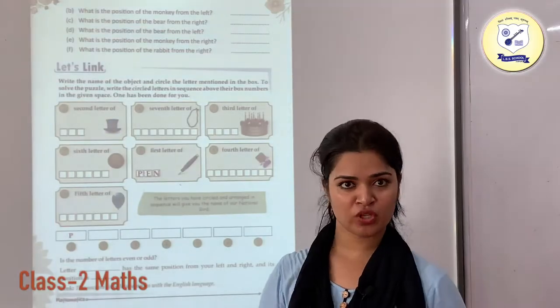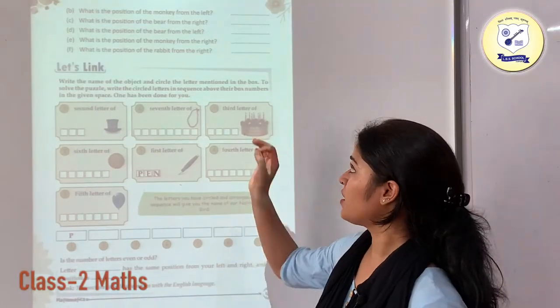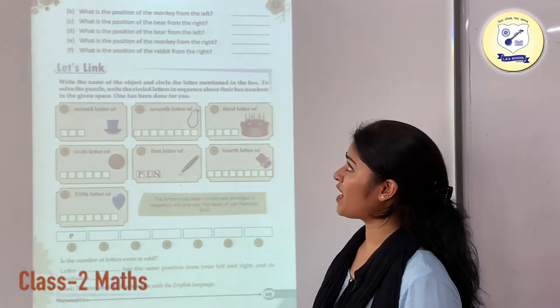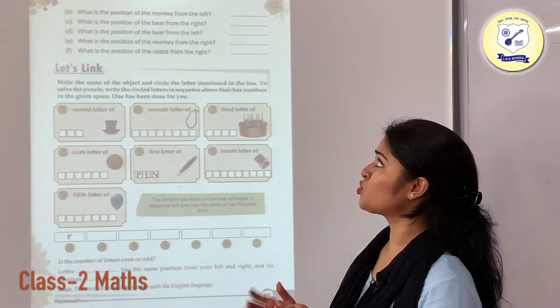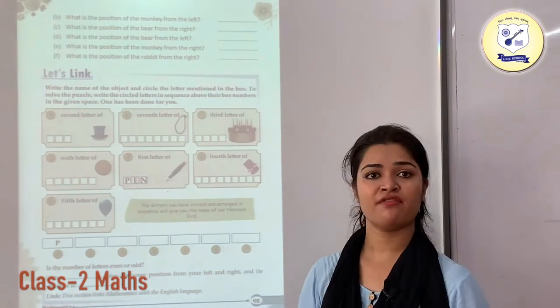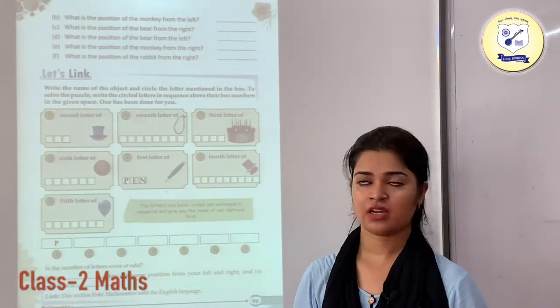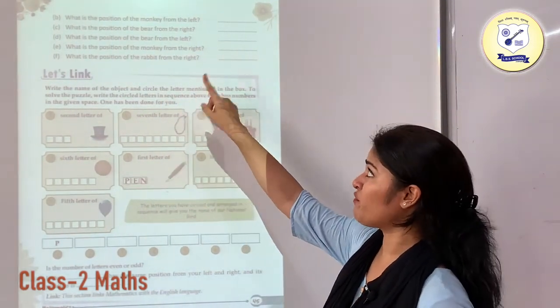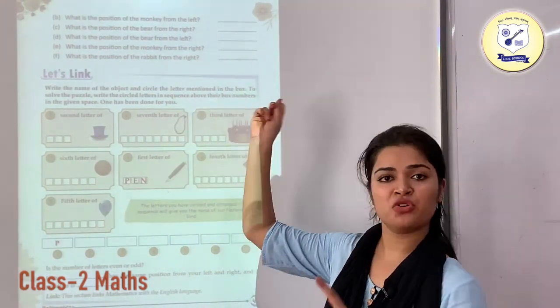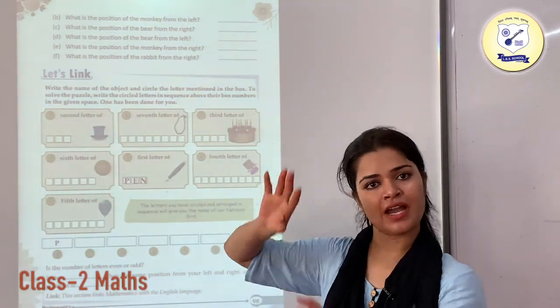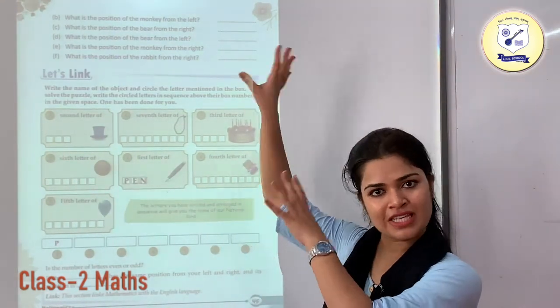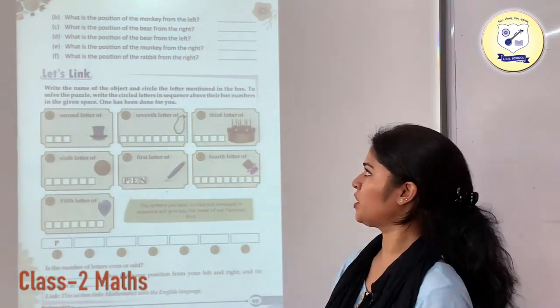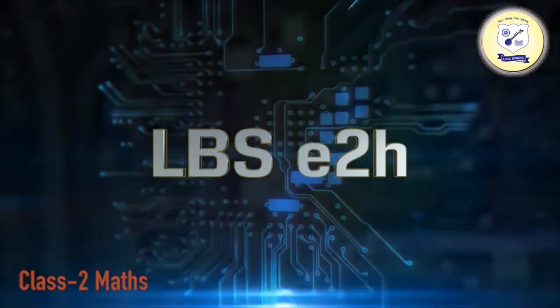Now we are going to move to the next questions. What is the position of the monkey from the left? What is the position of the hare from the right? You can just have a look at the picture and solve these questions by yourself.